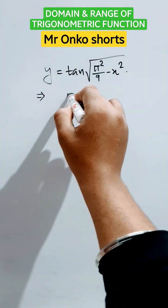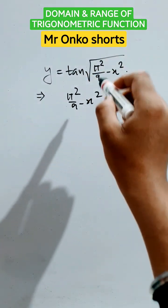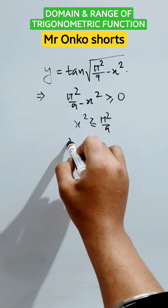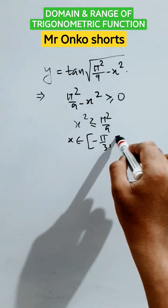y equals this, so this must be greater than or equal to 0 since it is under the root. So, x squared is less than or equal to π squared by 9. So, obviously x will belong to the closed interval minus π by 3 to π by 3.